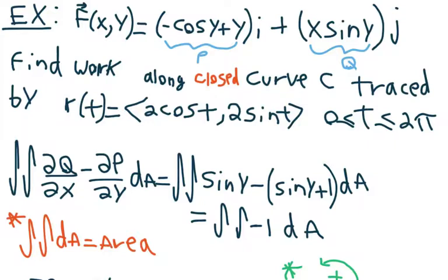If we do the double integral of dq over dx minus dp over dy times dA, we simply get the double integral of sin y minus sin y minus 1 dA, which is simply the double integral of minus 1 dA.